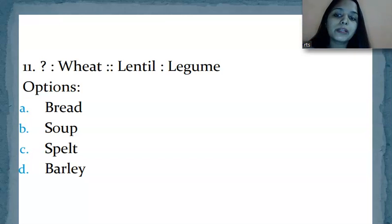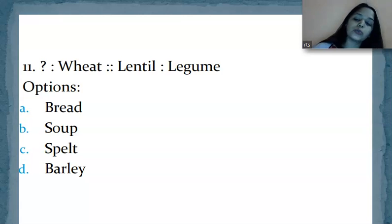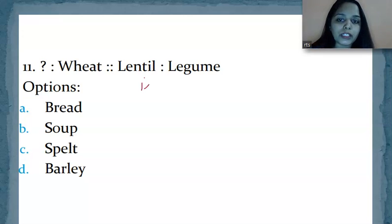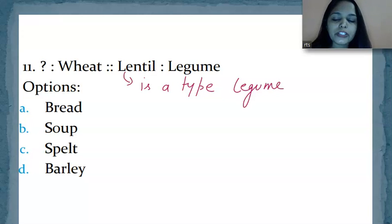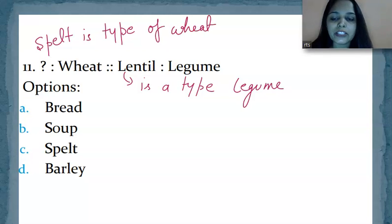Now the question is asking: lentil is related to legume. You have to find out which one will be related to wheat. See, lentil is a type of legume. In the same way, spelt is a type of wheat. Spelt is a type of wheat. So the correct answer will be spelt, option C.